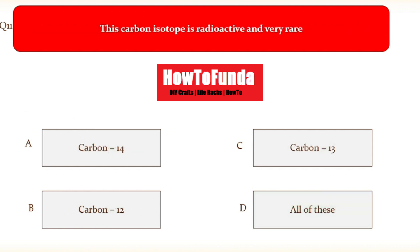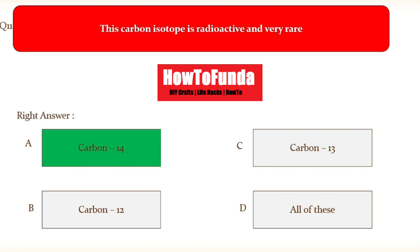Question number eleven: this carbon isotope is a radioactive material and is available very rarely. Option A carbon-14, option B carbon-12, option C carbon-13, option D all of these. The right answer is carbon-14 — carbon-14 is the isotope of carbon which is radioactive and very rarely available.